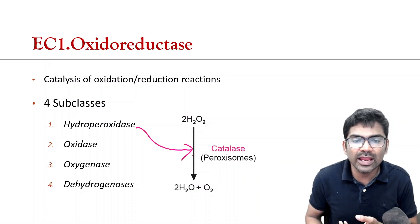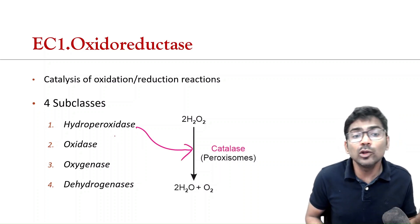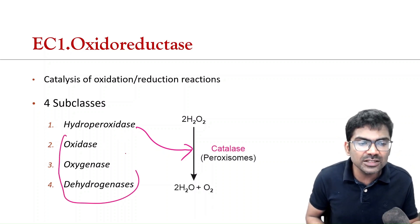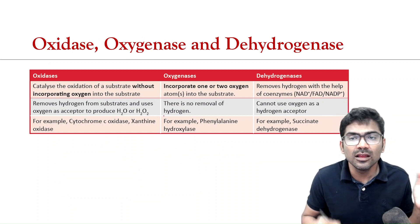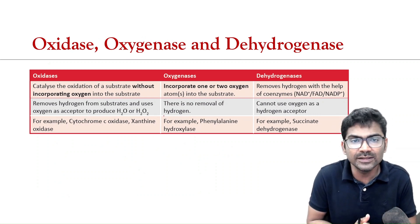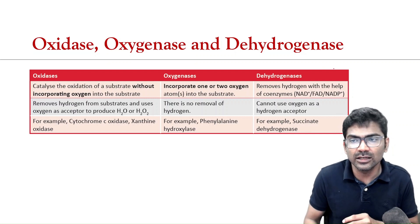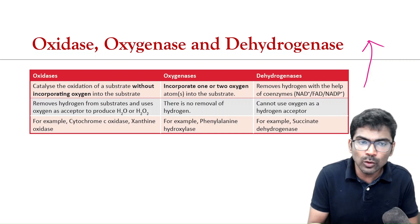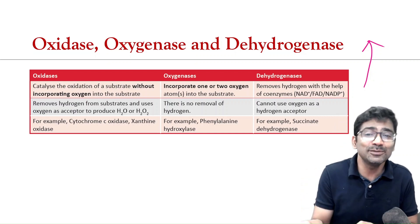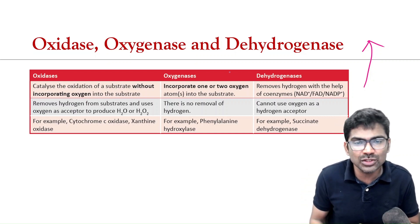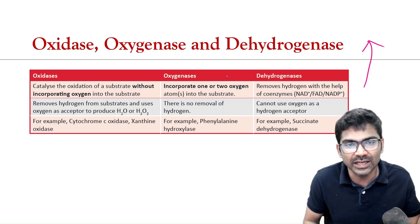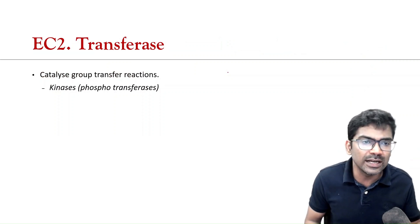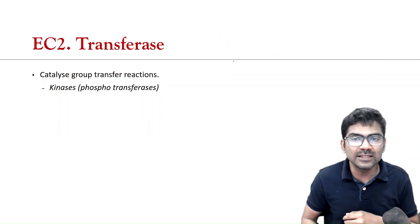Like for example, catalase belongs to the category of hydroperoxidase. And, I have differentiated oxidase, oxygenase and dehydrogenase using this table in that video very clearly. So, if you have not watched that video, you can watch this video after watching this video. So, complete this video, then go and watch the video on biological oxidation.